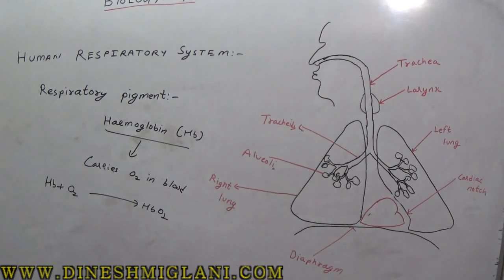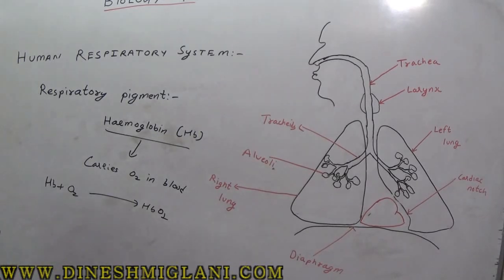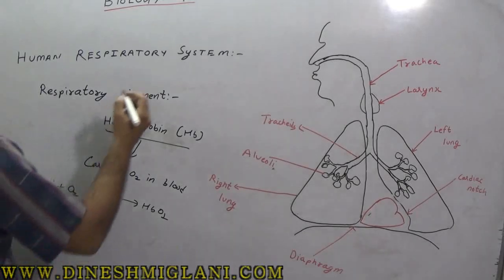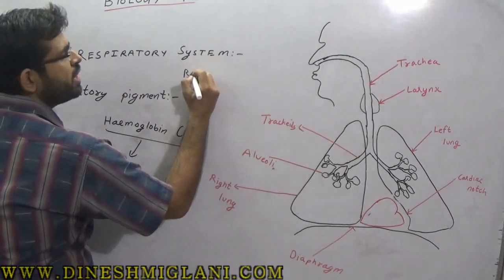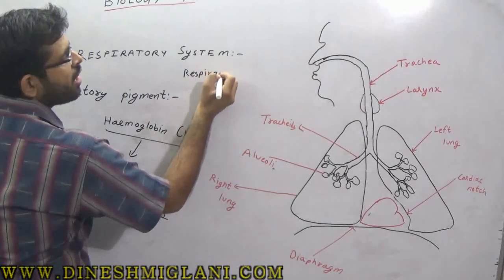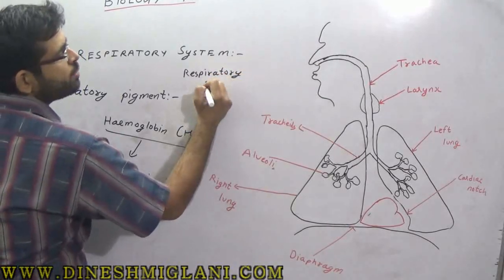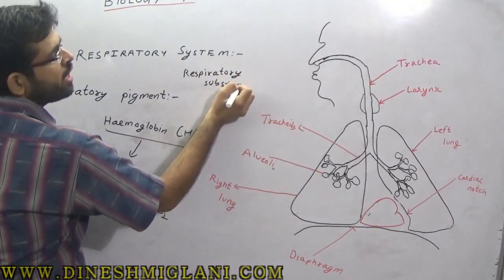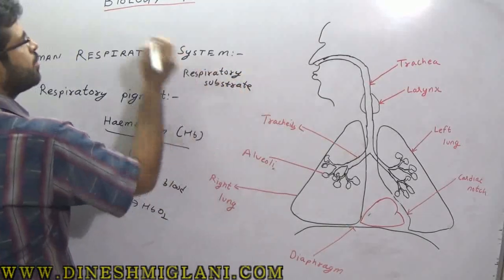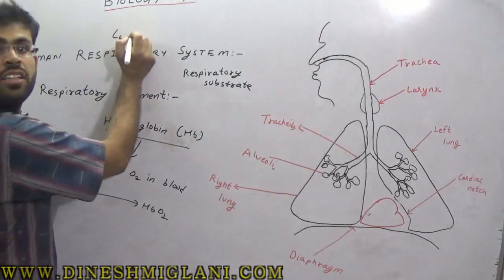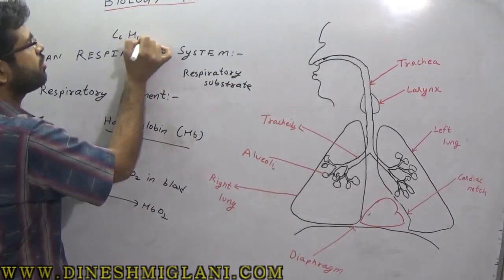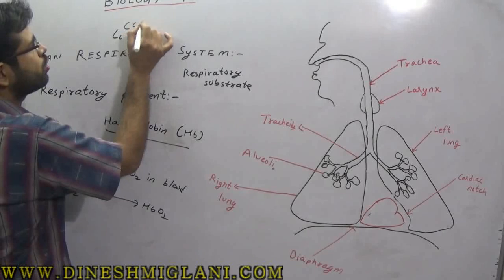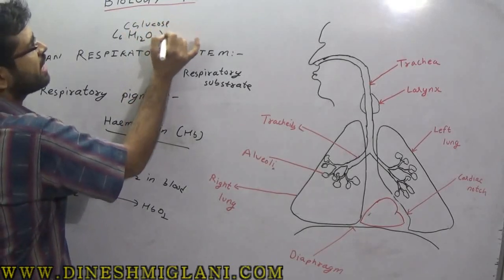This was about the diaphragm. After that comes the respiratory pigment. Blood carries the oxygen exchanged in the alveoli to the entire body. The respiratory pigment present in blood is hemoglobin. Hemoglobin (Hb) carries oxygen in the blood, binds with it, and delivers it to every cell of the body. Hence hemoglobin is the respiratory pigment of humans, and this completes the respiratory system. The next topic is the circulatory system. Also, the respiratory substrate of our body is glucose — C6H12O6, which is oxidized during respiration.